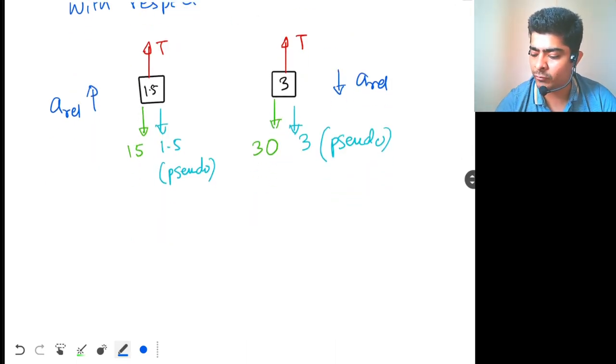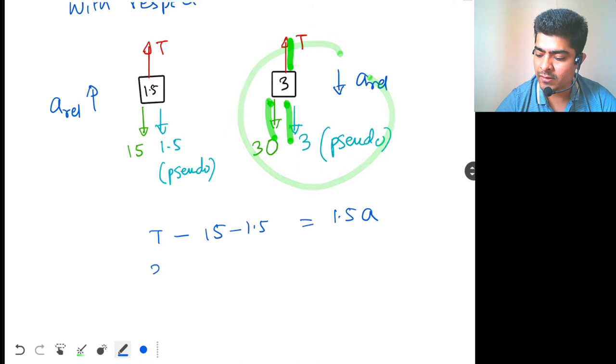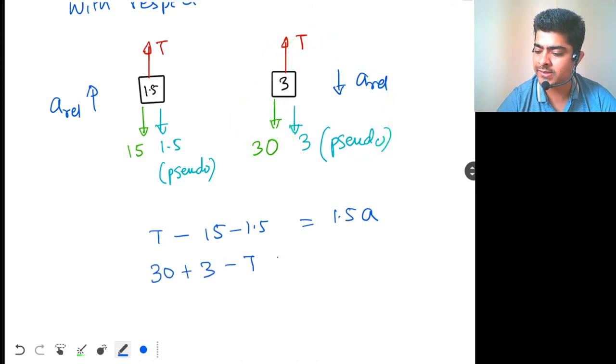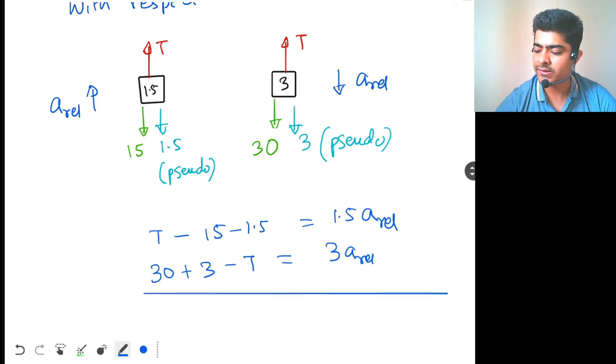So, let's write the equation. For this block, what do we have? t minus 15 minus 1.5 equal to 1.5 a. For this block, 30 plus 3 minus t. So, 30 plus 3 minus t is equal to 3 a relative. Add these two equations.